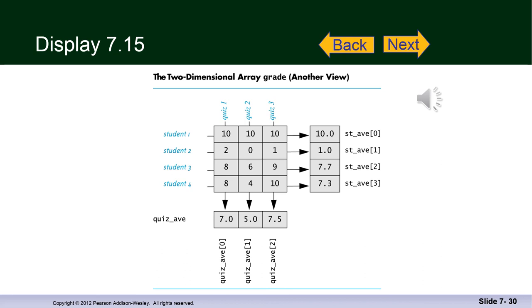Here the author presents an alternate view of the array and how the student averages are calculated across a row and how the quiz averages are calculated down a column. For Excel users, this might make more sense. I know it did to me the first time I looked at this concept in this context. I thought, wow, that's a better way of looking at this than just the index locations.